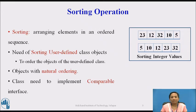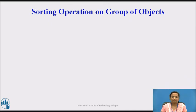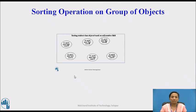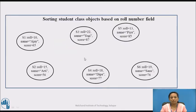The comparable interface helps us to accomplish this goal. Comparable can't sort the objects on its own, but the interface defines a method compareTo. The class needs to implement the comparable interface to overwrite this interface. Here we will see one example of a sorting operation on a group of objects, considering a group of objects of the student class.